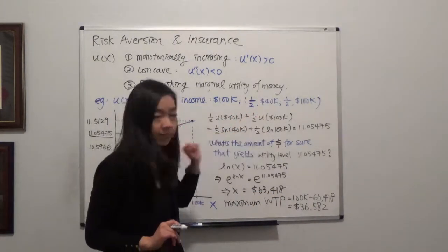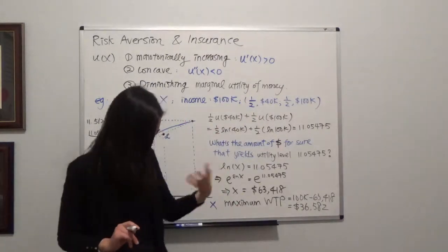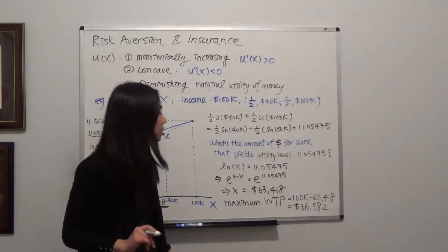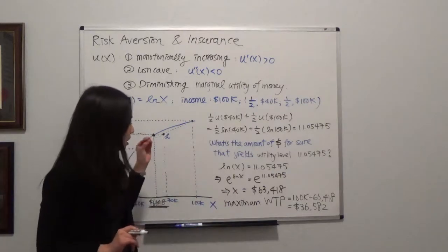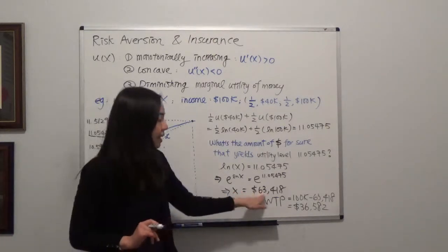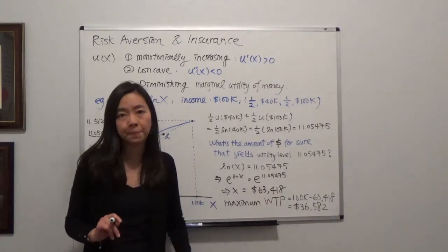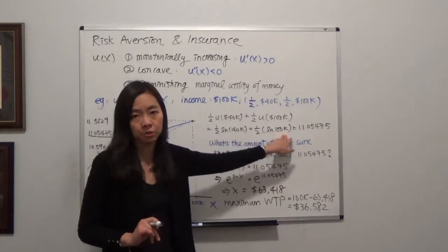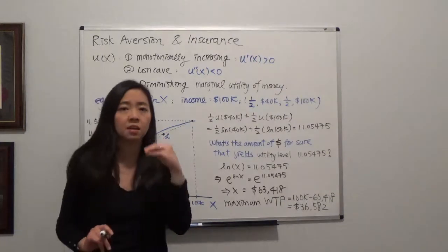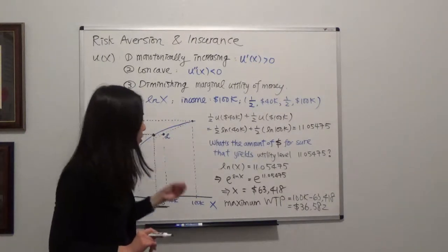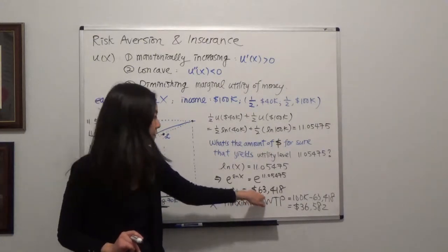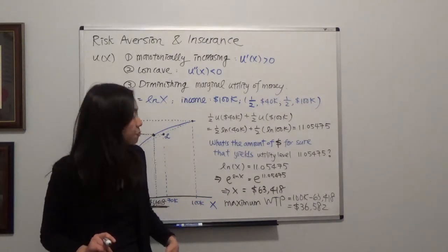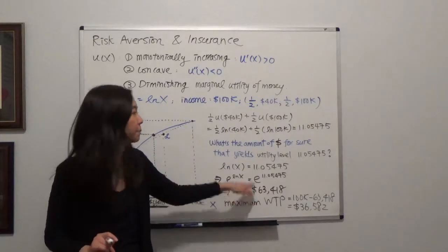So playing this lottery gives me the same utility as $63,418 in my pocket for sure. So whatever that is, for the insurance I'm going to pay, I must have at least $63,418 in my pocket for me to feel indifferent as having this amount of money. That means I am not going to pay the amount of money so that I will be left with the money that's less than $63,418. I need to have at least this amount of money in my pocket for me to remain indifferent between having this amount of money and playing that lottery.